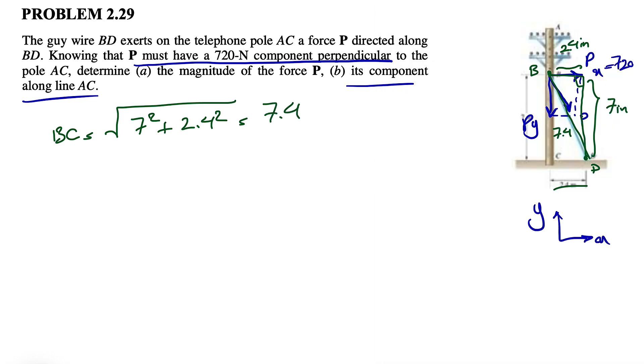So the hypotenuse is 7.4. So if that's the case, our PX in here would be P times cosine of this angle, we can call it alpha, which is 2.4 over 7.4. And we are looking for P because we know that equals 700. So this will be equal to PX times 7.4 divided by 2.4. So if we want to find P, we know PX is 720.